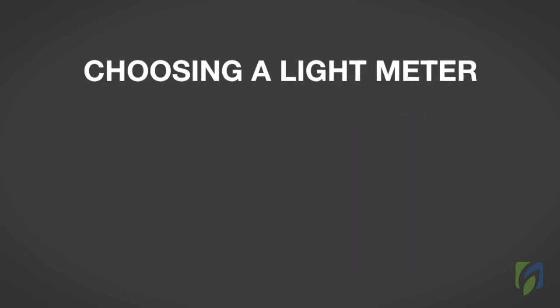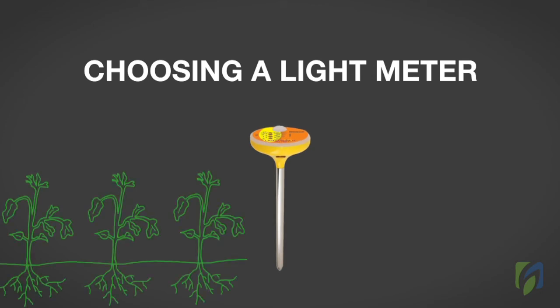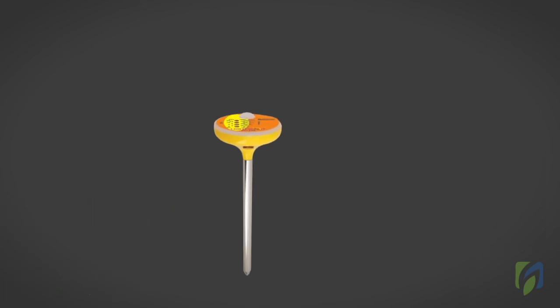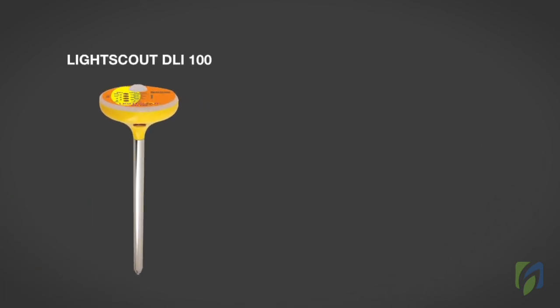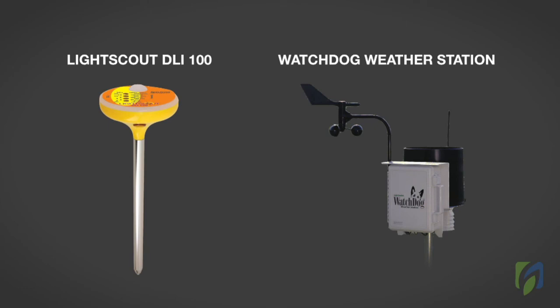Choosing a Light Meter. Meters are now available that automatically measure the DLI being received by a crop. When measuring DLI, all light sensors should be placed next to the crop and kept at a canopy height to accurately measure the light level. The Light Scout DLI 100 meter and the Watchdog weather station are two mobile self-contained devices from Spectrum Technologies that can be used for measuring DLI.